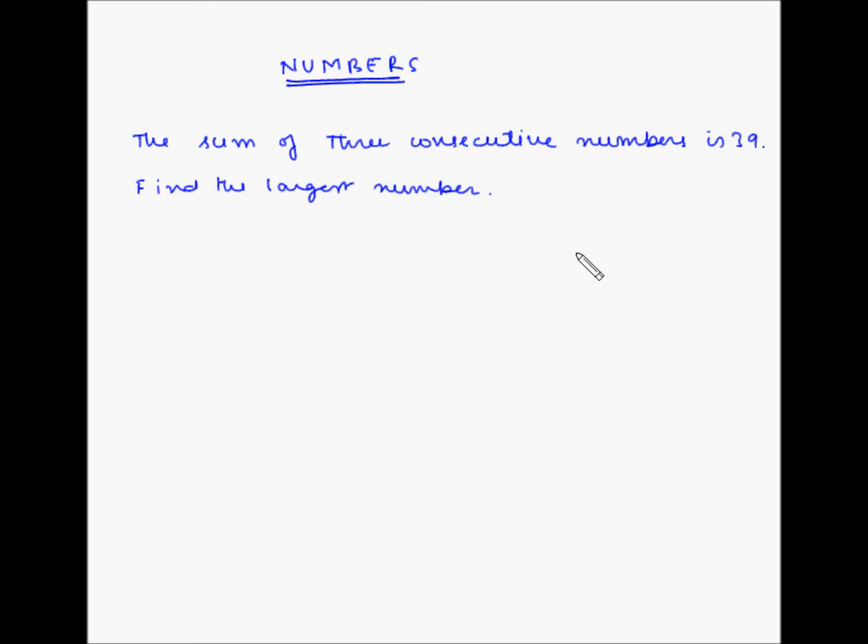So basically we know that what are consecutive numbers. So 6, 7, 8 are 3 consecutive numbers or 9, 10, 11 are 3 consecutive numbers and so on.